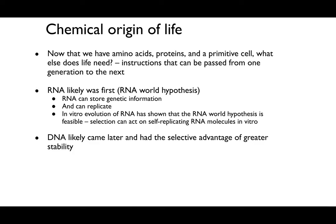At this point in time, we have amino acids, proteins, and a primitive cell. The question to ask is: what does life need besides those things? The last thing we need is instructions—something that can be passed on from one generation to the next, keeping information at the cellular level. That answer comes in the form of nucleic acids: DNA and RNA.